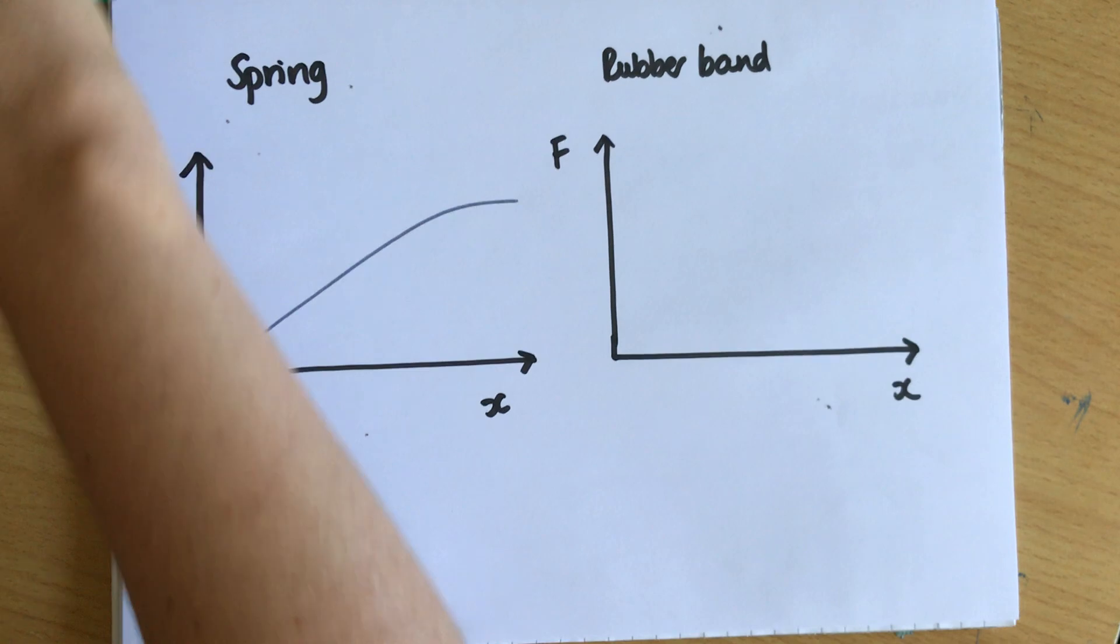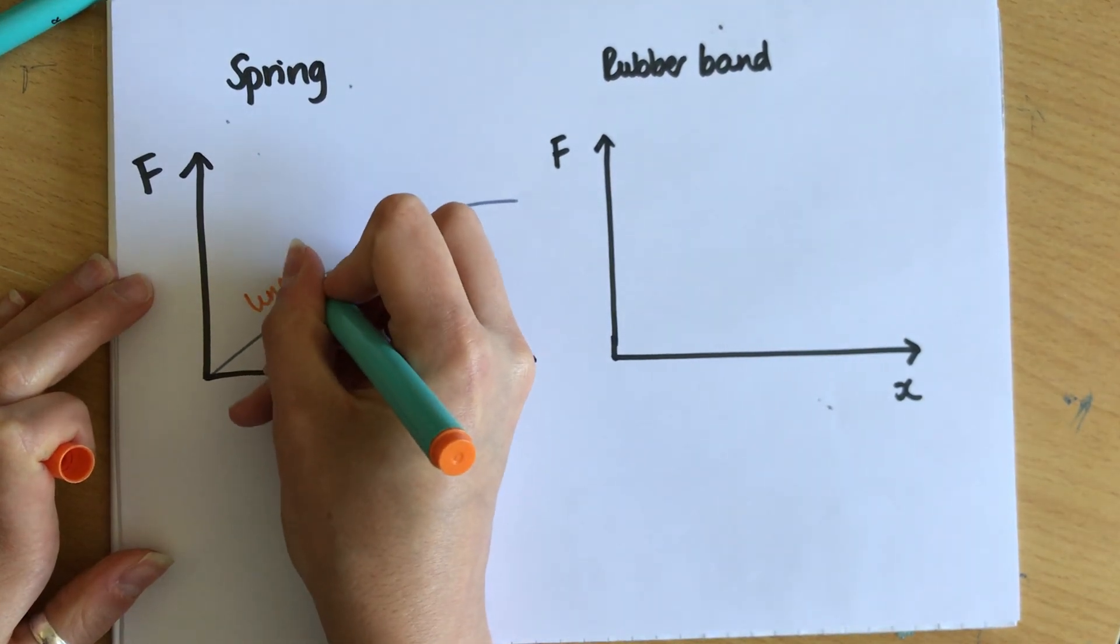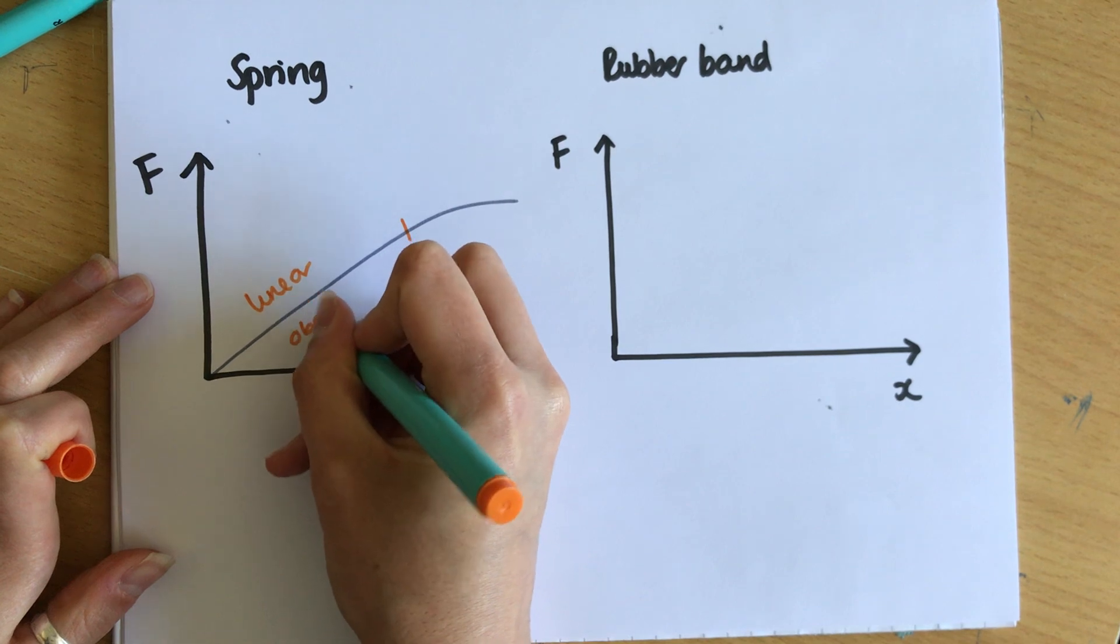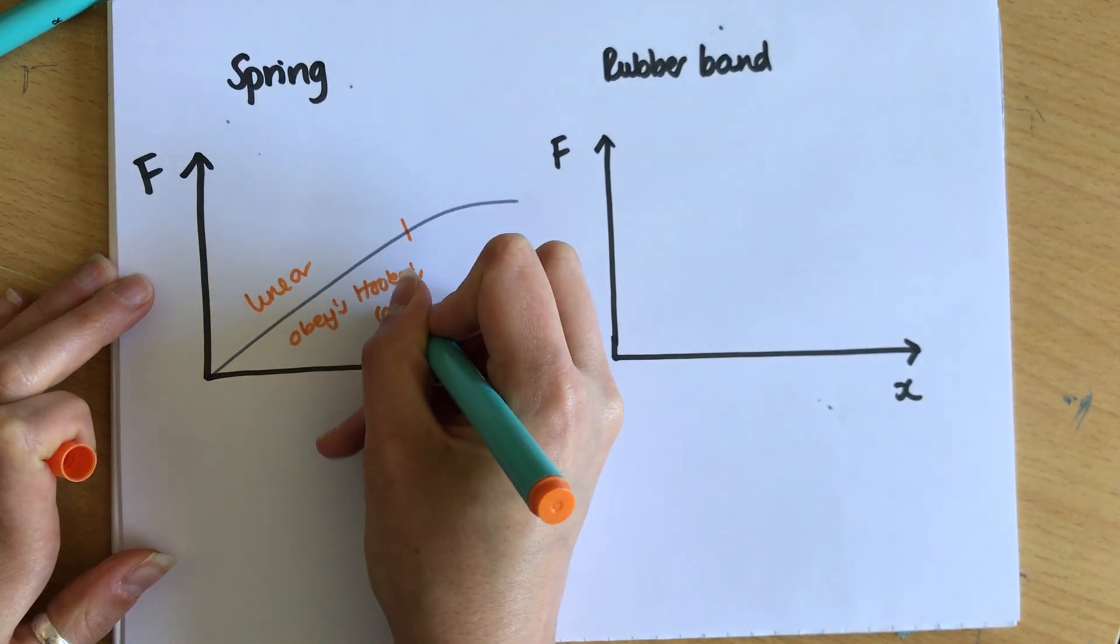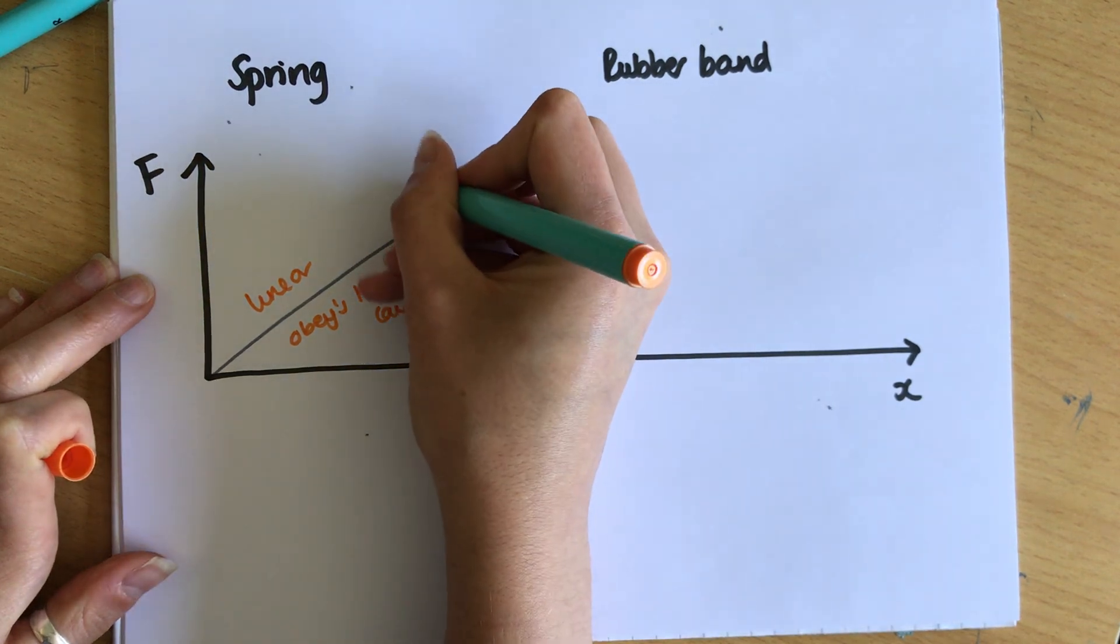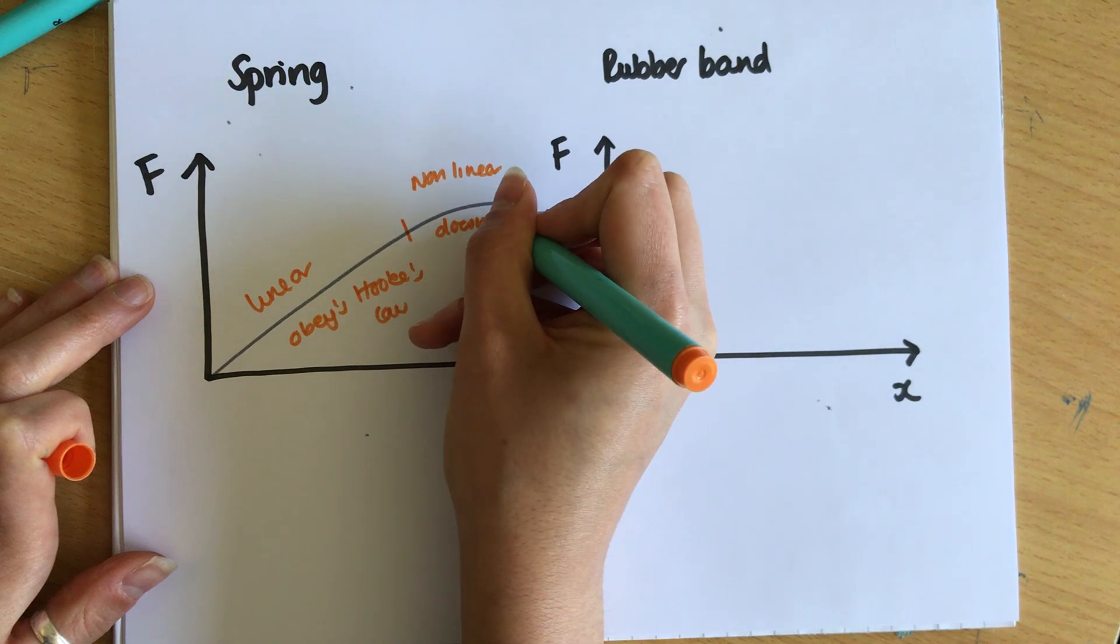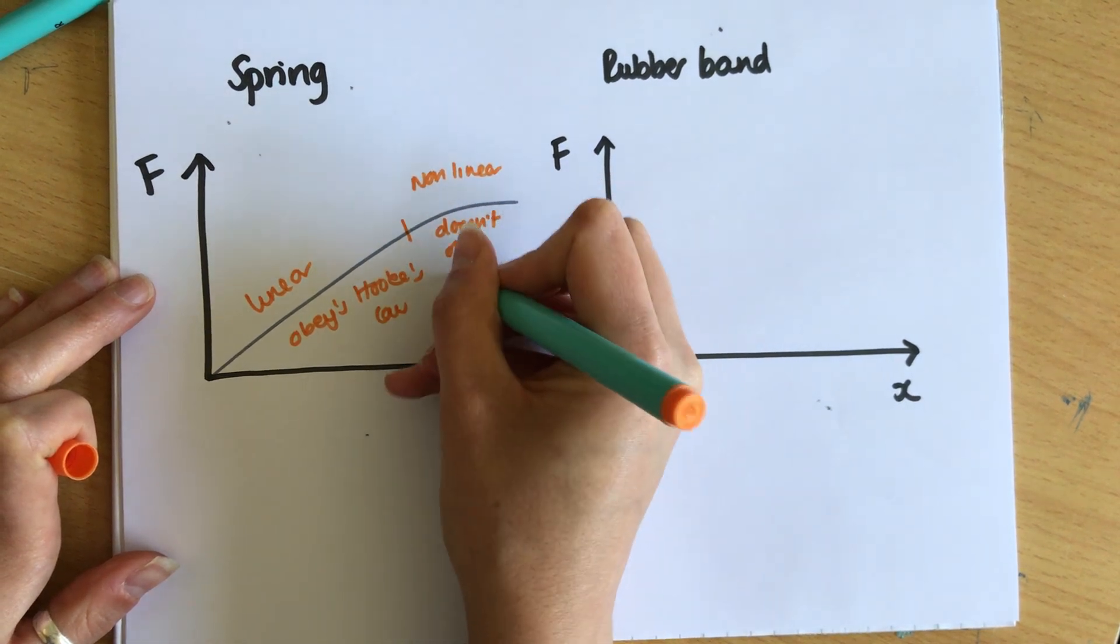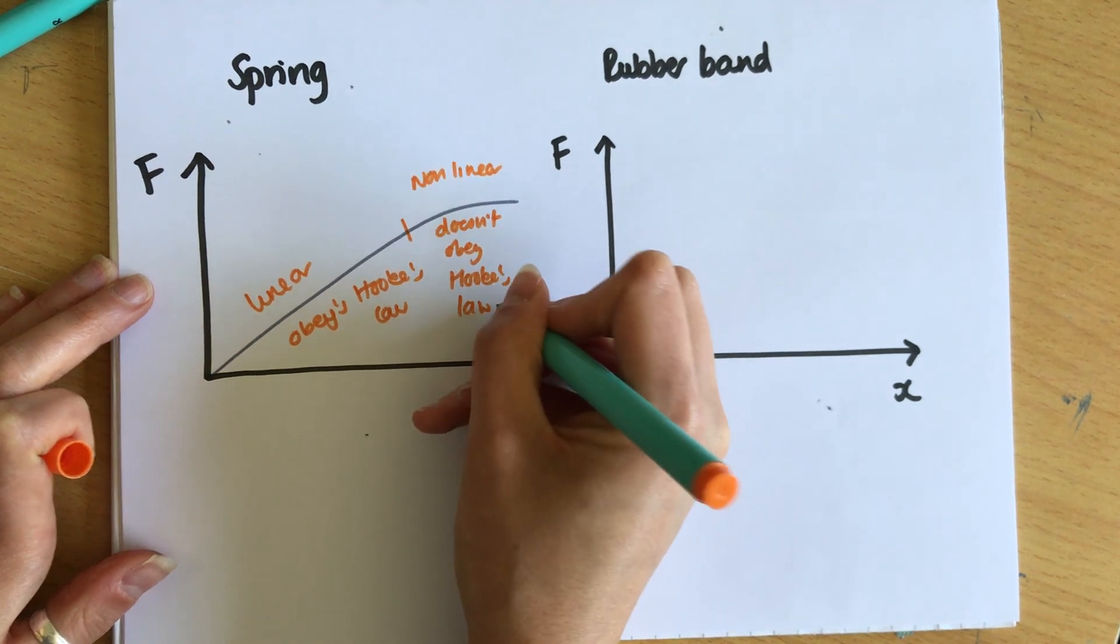And at the point where it starts to curve—so at this point here until here it's linear and it obeys Hooke's law—after this point it's nonlinear so it doesn't obey Hooke's law.